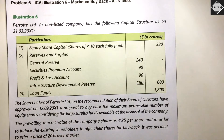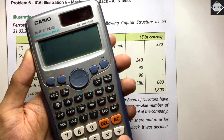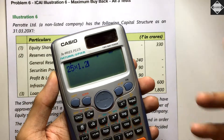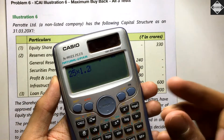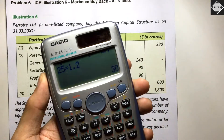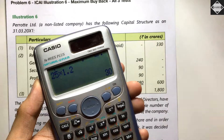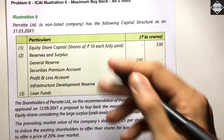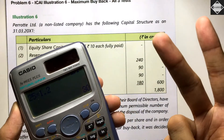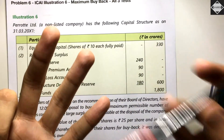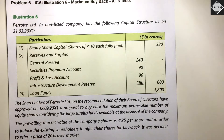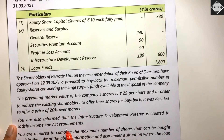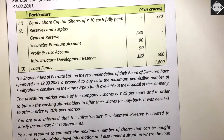The buyback price calculation is simple: market price is Rs. 25, multiply by 1.2 (i.e., 120%) to get Rs. 30. So Rs. 30 is the buyback price. If the buyback price is Rs. 30 and face value is Rs. 10, then the premium on buyback is Rs. 20. You are also informed that the Infrastructure Development Reserve is created to satisfy Income Tax Act requirements — confirming it is not a free reserve.